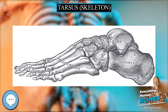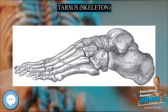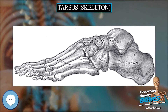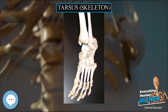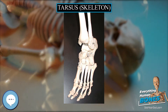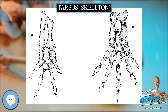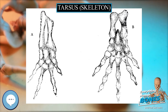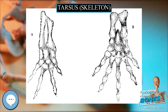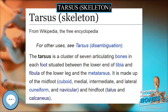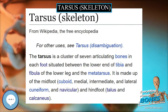Human anatomy. Bones. The talus bone, or ankle bone, is connected superiorly to the two bones of the lower leg — the tibia and fibula — to form the ankle joint or talocrural joint, and inferiorly, at the subtalar joint, to the calcaneus or heel bone. Together, the talus and calcaneus form the hindfoot.